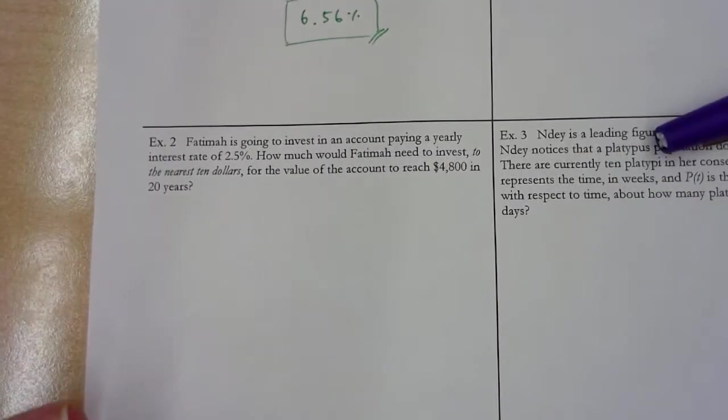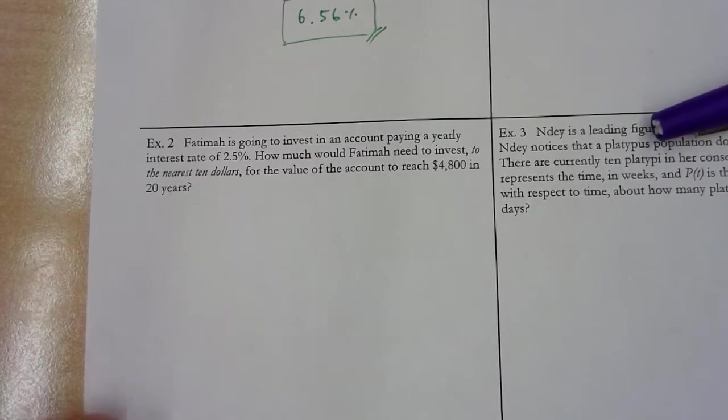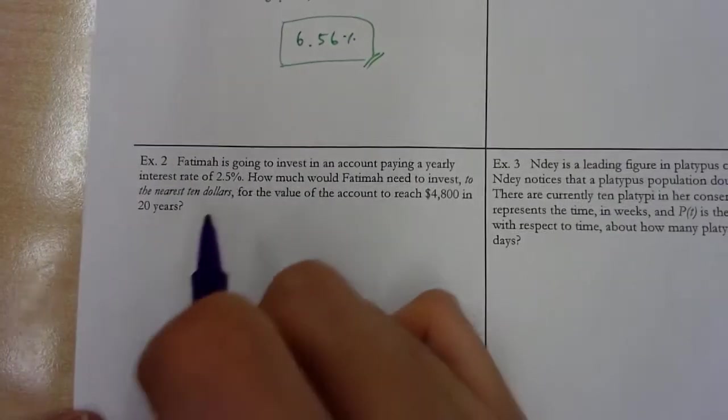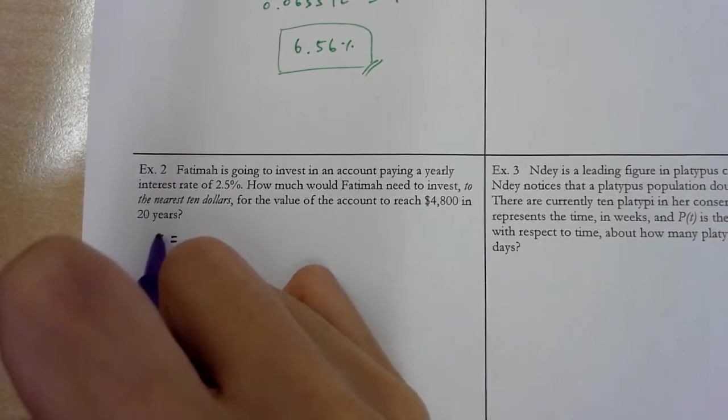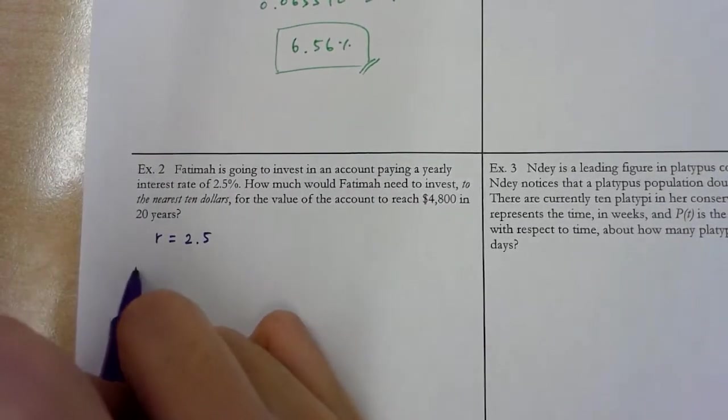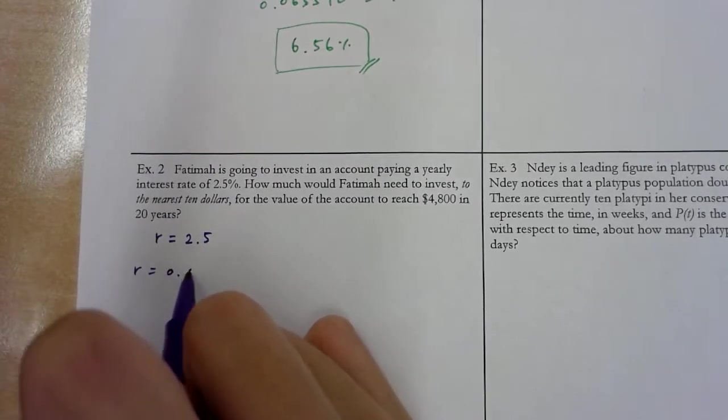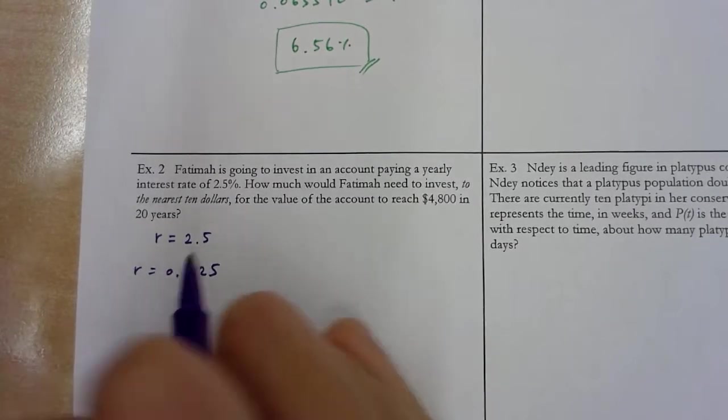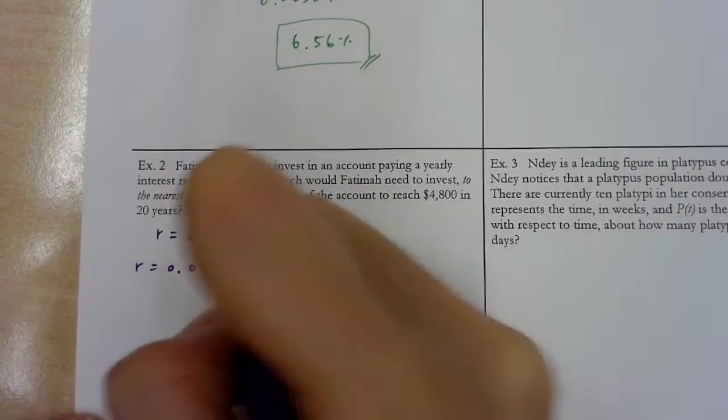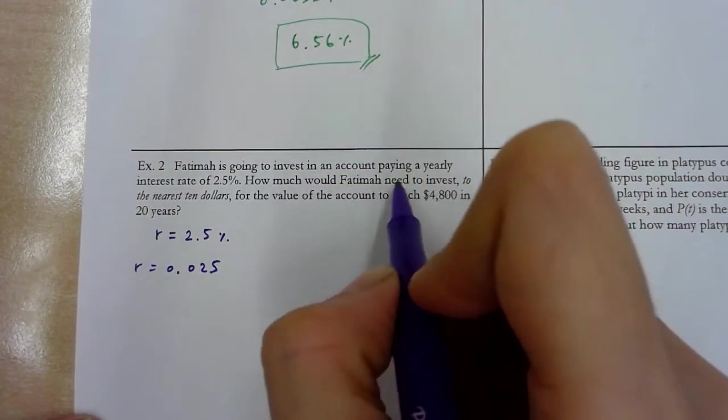Let's go on to example 2. I would strongly recommend that you pause the video, identify the given information, and then set up the equation. Then play the video again. So here, people can write 2.5, but I personally prefer converting right away to the decimal. The way I check it is, if I move 2 to the right, it better be that percentage, right?